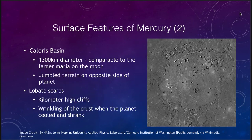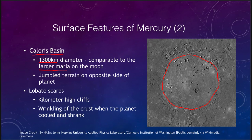Looking at MESSENGER images in more detail, we see a very large basin called the Caloris Basin, which is 1,300 kilometers in diameter and comparable to the larger Maria on the Moon. However, unlike the lunar Maria, it has not been flooded by lava flows — it still has a decent number of craters inside and around it. So while large impacts did occur on Mercury, we do not see any of the Maria-like features we see on the Moon.